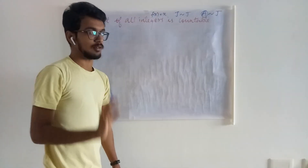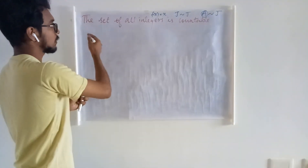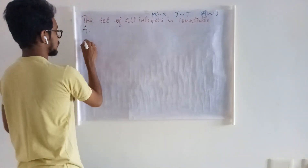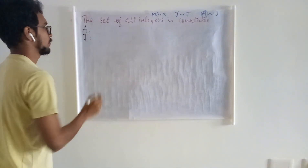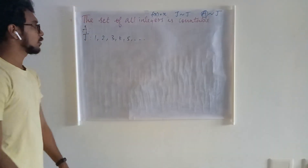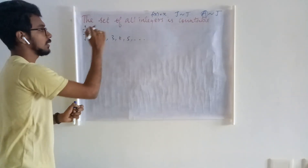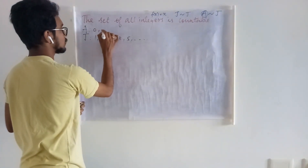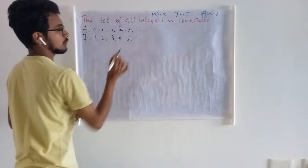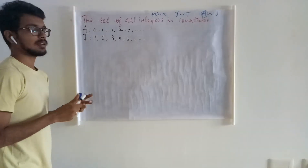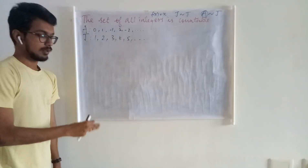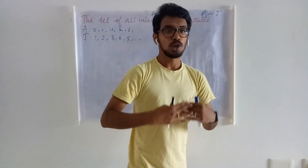So we have one example of a countable set. Next, we are going to prove the set of all integers is countable. I will denote the set of all integers as A and the set of all positive integers as J. I am going to consider the set of all integers in a particular arrangement — it is not necessary to always use this arrangement; you may consider another way as well.